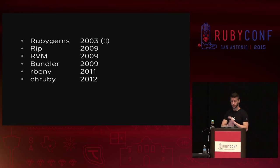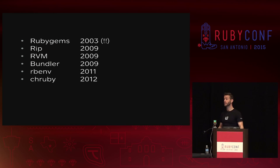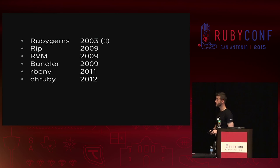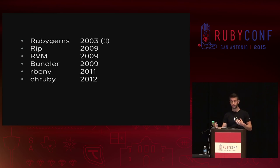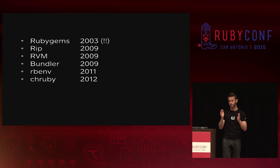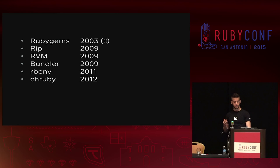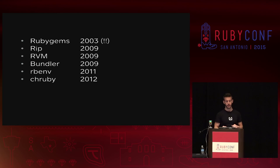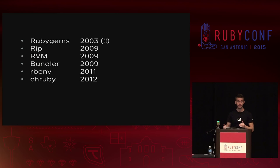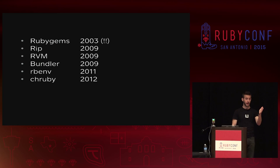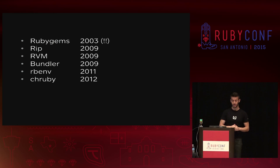RubyGems is totally old — it started early, we needed it, it's been the bedrock of dependency management in Ruby since 2003. Then RIP came out in 2009, more as a prototype. RVM also came out around then because people were straddling 1.8 and 1.9 — a very confusing time. Bundler followed fast after. A couple years later, Sam Stephenson built rbenv to replace RVM; now they exist in parallel. A year after that, Hal Brodigan built chruby — my personal strong recommendation. It has tens of lines of code. You say 'change the Ruby to this Ruby' and it sets PATH, GEM_HOME, and GEM_PATH. That's basically all it does.